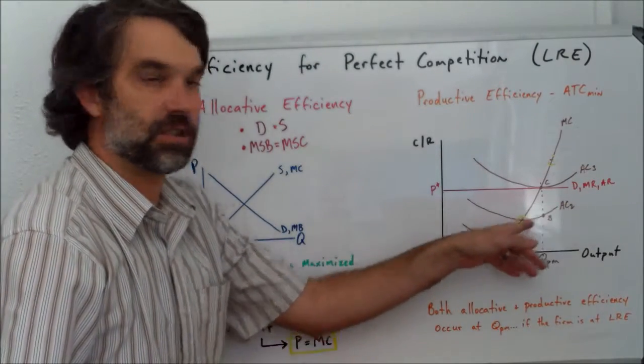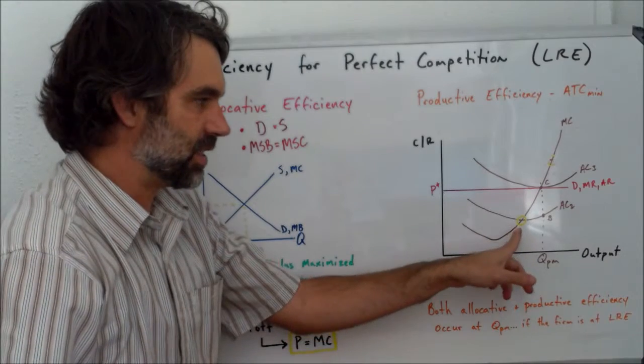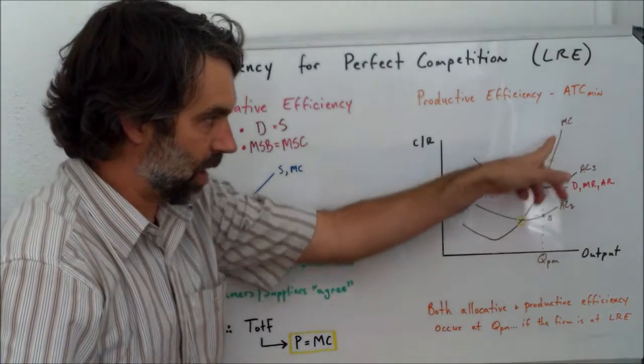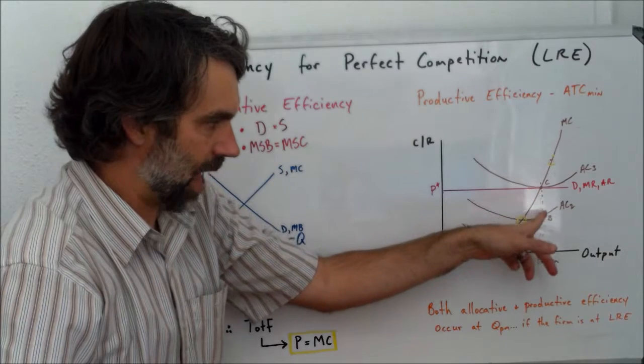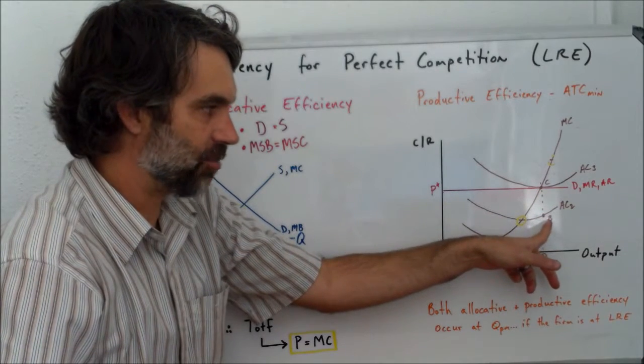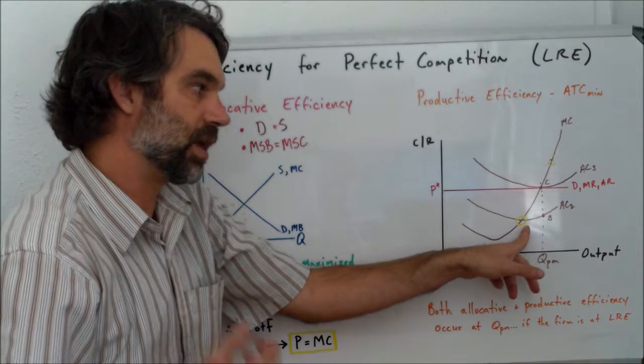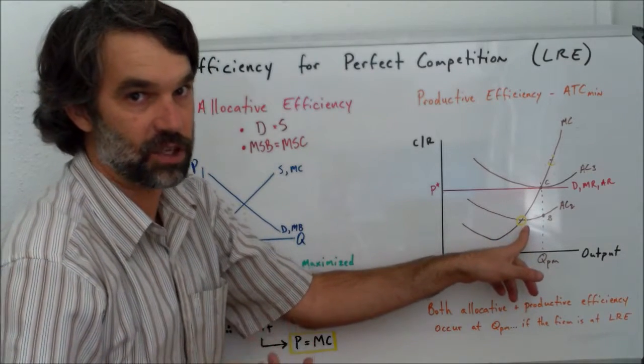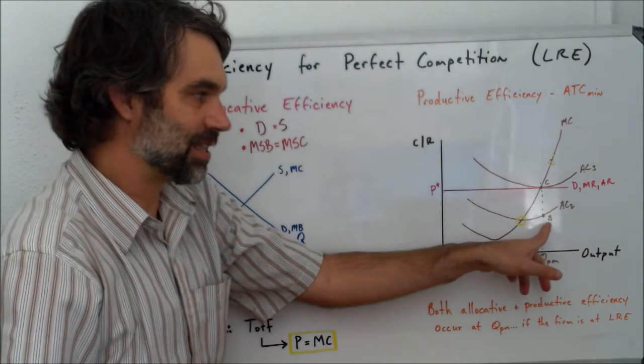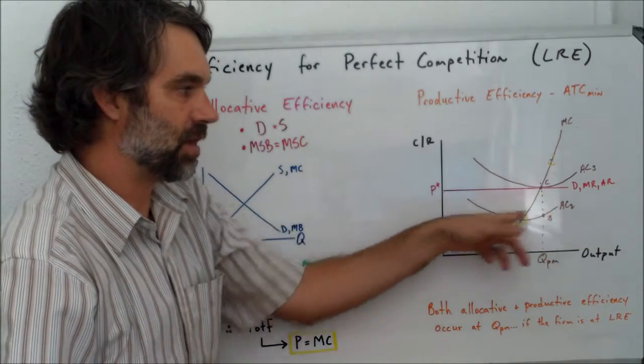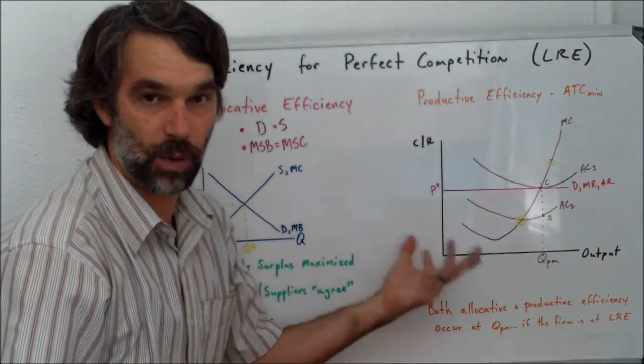What about average cost curve 2? Again, we see that at the point of profit maximization, that the average cost that this firm is going to have would be point B here. And that's not the lowest point. That's not the point where it's productively efficient. But since this point is below average revenue, that means this firm would be making abnormal profit.